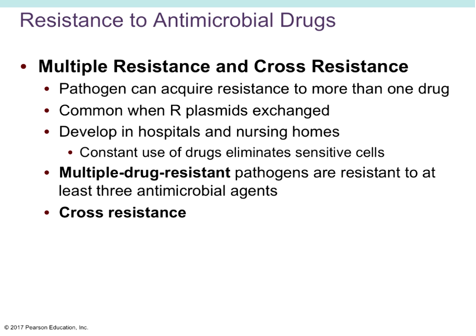Multiple resistance and cross-resistance: some microbes can be resistant to various different types of antibiotics and can acquire resistance to additional types. This is common when plasmids are exchanged through conjugation, and we see a lot of this in hospital settings where the same drugs are constantly used, eliminating the sensitive cells while leaving the resistant ones to grow. Multiple drug-resistant pathogens are resistant to at least three different antimicrobial drugs.